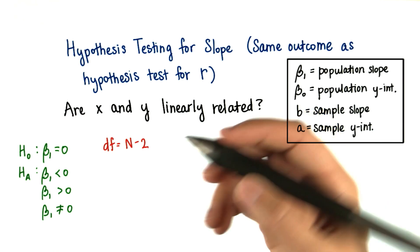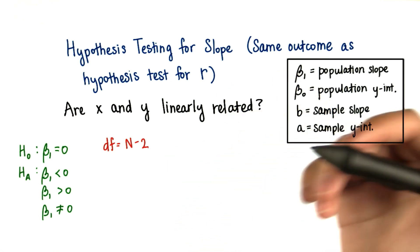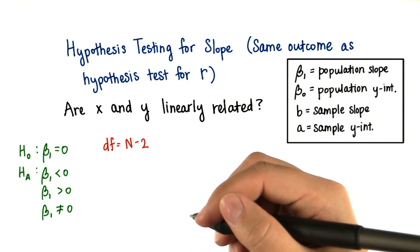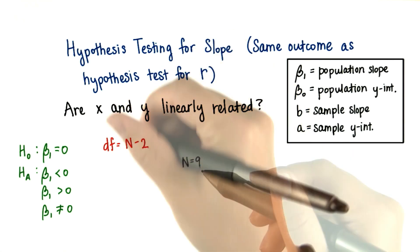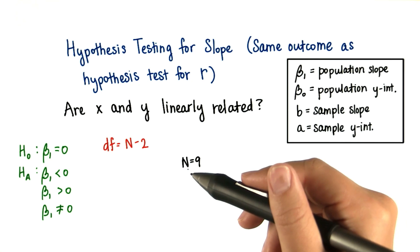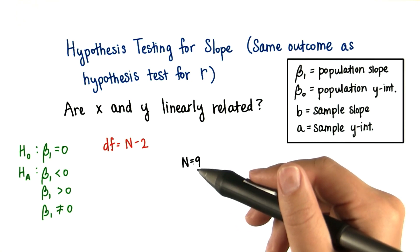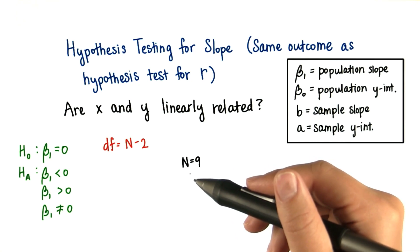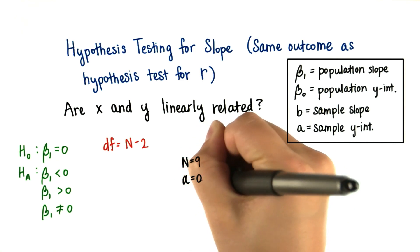For example, let's say you're measuring the relationship between two variables, x and y, and you have nine data points. So nine values of x, the independent variable, and nine values of y, the dependent variable. And let's say we do a non-directional test at alpha equals 0.05.